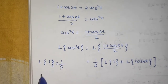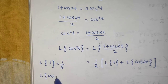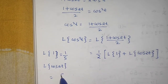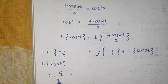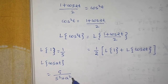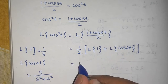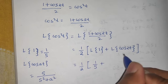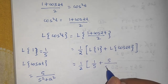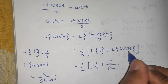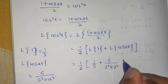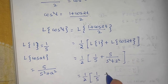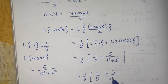We have also derived that L{cos(at)} = s / (s² + a²). Using both formulas: L{1} = 1/s, and L{cos(at)} = s/(s² + a²). Here a = 2, so a² = 4. We finally get (1/2)[1/s + s/(s² + 4)].